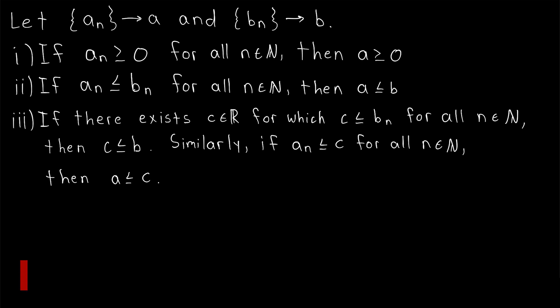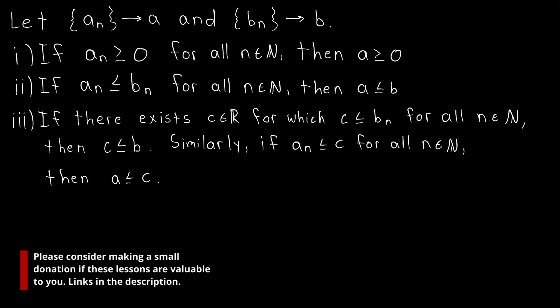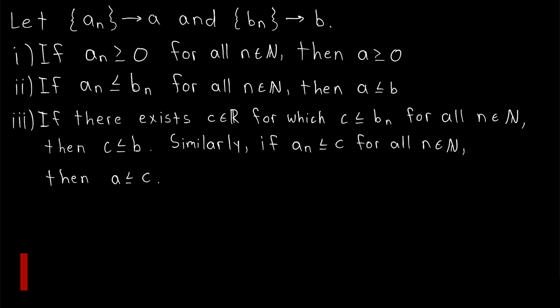We previously proved the basic sequence limit laws, which showed us that convergent sequences work very nicely with addition, subtraction, multiplication, and even division. Now we'll prove the so-called order limit theorem, which tells us that convergent sequences also work pretty nicely with the order relation.